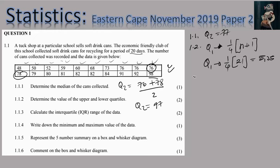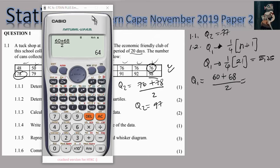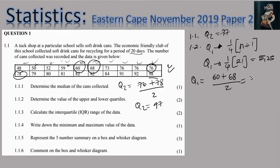Position 5.25 means Q1 is found between value number 5 and value number 6. So I calculate 60 plus 68, all over 2. Using the calculator, that gives me 64. So Q1 is equal to 64.